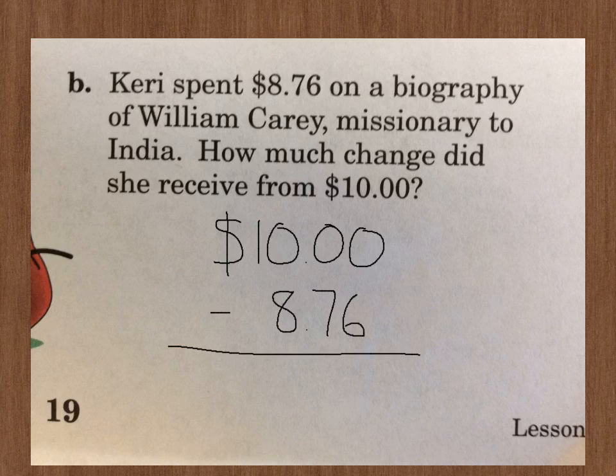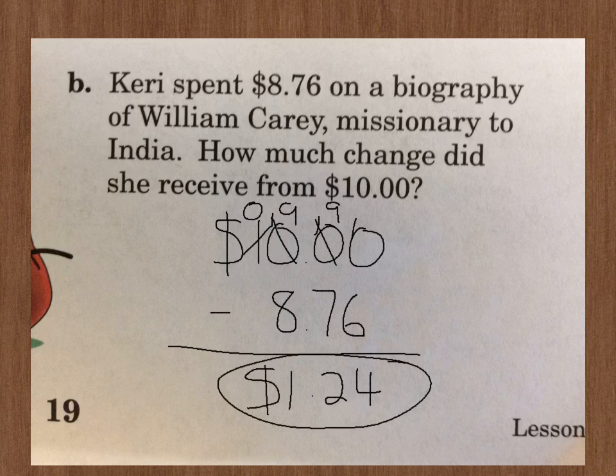Well, you can't take six away from zero. So we have to borrow, and we go way over here to borrow. Borrow from the one, it becomes zero. This becomes ten. Borrow from the ten, it becomes nine. And we borrowed one, so that becomes ten. Borrow from the ten, it becomes nine. We borrowed one, so that becomes ten. Alright, ten minus six, we get four. Nine minus seven, we get two. I'll bring down the decimal point. Nine minus eight, we get one. And so her change is one dollar, twenty-four cents.